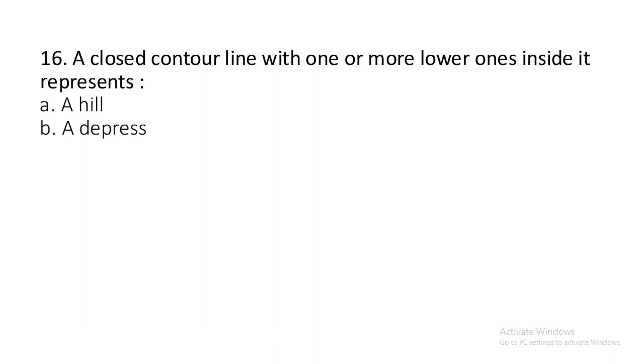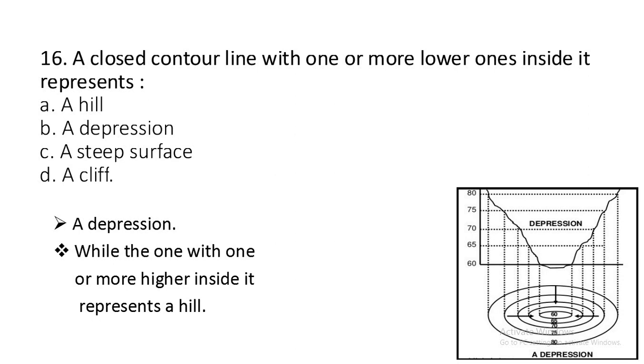Question number sixteen: A closed contour line with one or more lower ones inside it represents a hill, a depression, a steep surface, or a cliff? It is a depression, while the one with one or more higher inside it represents a hill. If the contour line is of higher elevation inside than that of outside, it represents a hill. But if a contour line is lower inside, then it is a depression.